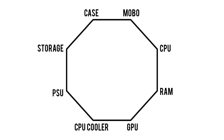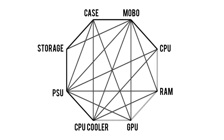Looking at the chart, you can think of each of these parts as a puzzle piece that needs to fit with certain other parts in the group to make a working computer. Here's what all the compatibility lines for every part looks like, and we'll be going over each of these today.